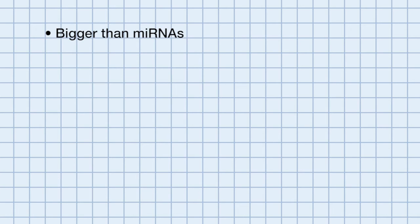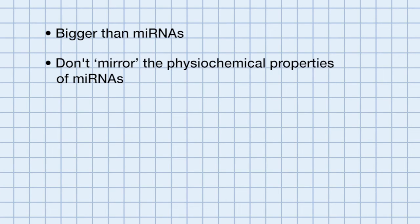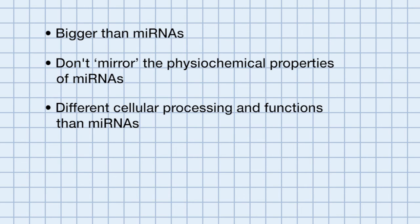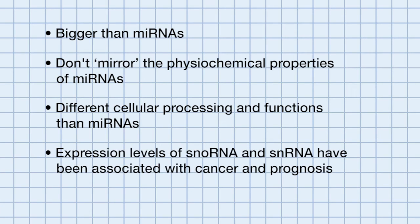Historically, non-coding RNAs such as snoRNAs or snRNAs were used as endogenous normalizers for microRNA quantification. But more recently, key opinion leaders in the microRNA community have moved away from the use of snoRNAs and snRNAs as endogenous controls for the following reasons: they are bigger than microRNAs, they don't mirror the physiochemical properties of microRNAs, they have different cellular processes and functions, and the expression levels of snoRNAs and snRNAs have been recently found to be associated with cancer and prognosis.